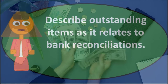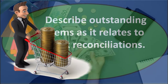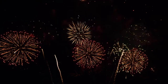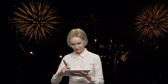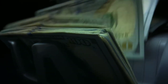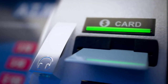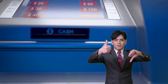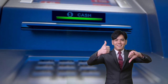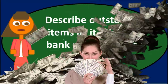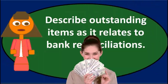Outstanding checks are those checks that we wrote at some point — if we're talking about December, probably towards the end of December — that have not yet cleared the bank. If we wrote a check on December 25th and got the bank statement for the month ended December 31st and that check is not on the statement, it just hasn't cleared yet. We recorded the check and we know our bank account should be decreased by that amount, but it takes time for the check to reach the other person, for them to deposit it, and for our bank to be notified — creating this timing difference.